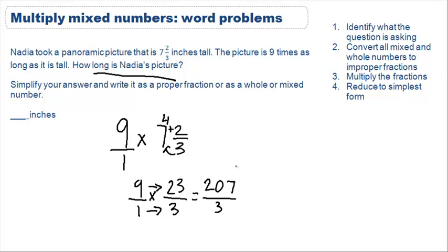Step four says reduce to the simplest form. We'll find out how many times three goes into 207. Three does not go into two. Three does go into 20 six times. Six times three is equal to 18. We'll subtract. We have two and we'll bring down the seven. Three goes into 27 nine times. The answer to how long is Nadia's picture is 69 inches. Remember, don't forget to add your units.